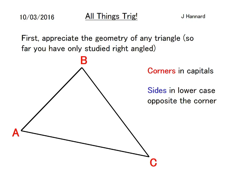First, appreciate the geometry of any triangle. So far you've only studied right-angled triangles if you've seen SOHCAHTOA for the first time. The corners are in capitals ABC, and the sides are in lowercase opposite to the corner. Capital A with little a, capital B with little b, and capital C with little c.